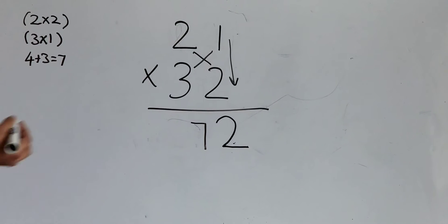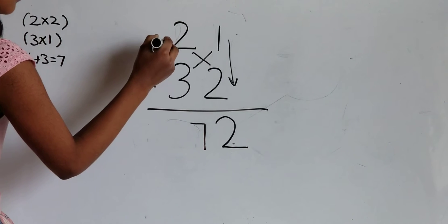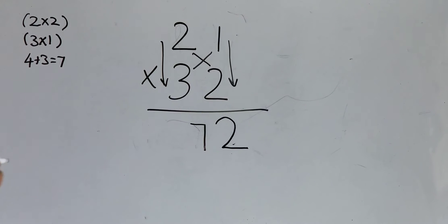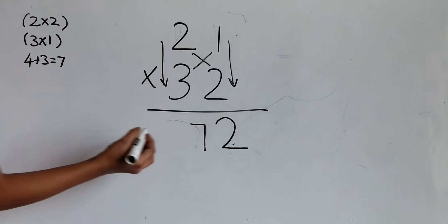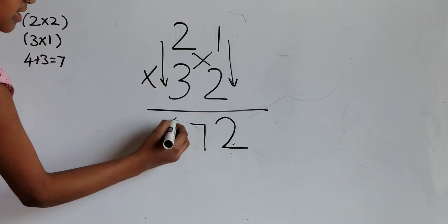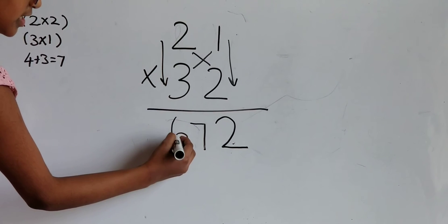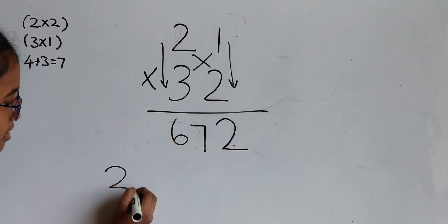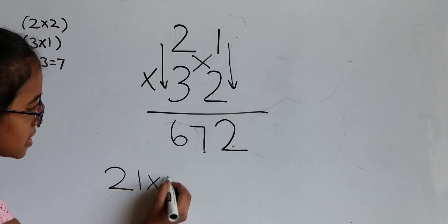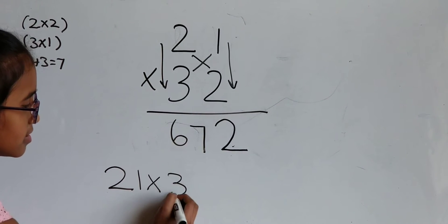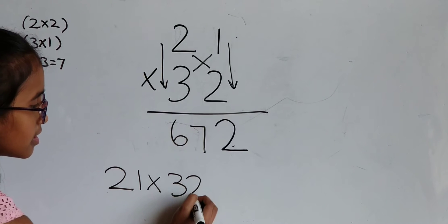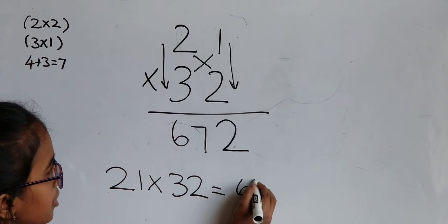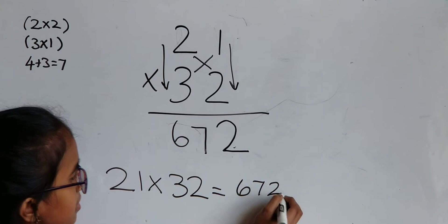Next, multiply 2 times 3 vertically. 2 times 3 is 6. Write 6 over here. 21 times 32 equals 672.